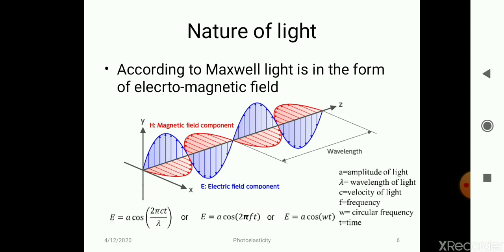He also derived the equation for magnitude of light: that is equal to A cos omega t, where A is the amplitude of the light, lambda is the wavelength of the light, c is the velocity of light, f is frequency, and omega belongs to circular frequency of the light, t is the time.